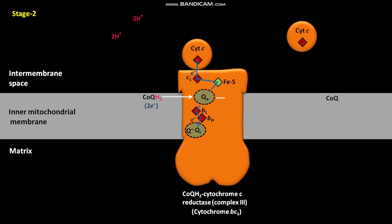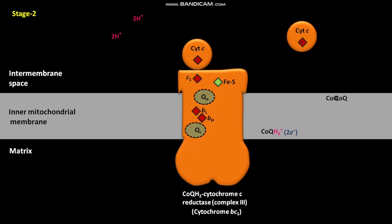One electron released from the second COQH2 is added to the COQ semiquinone anion (Q•⁻) present at the QI site. Two H+ ions from the mitochondrial matrix are also added to the Q•⁻ at the QI site. As a result, a fully reduced COQH2 molecule is produced at the QI site. This fully reduced COQH2 dissociates from the QI site, leaving it free to bind a new COQ molecule.